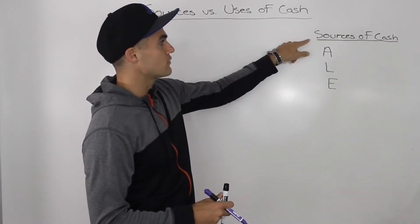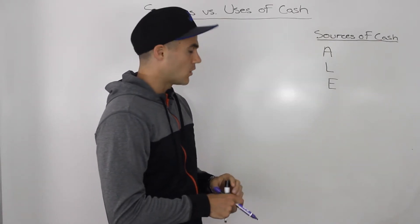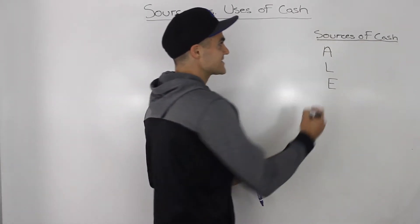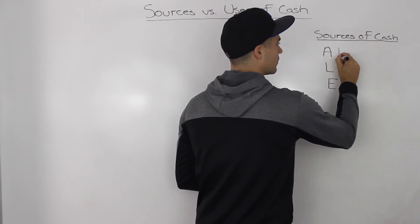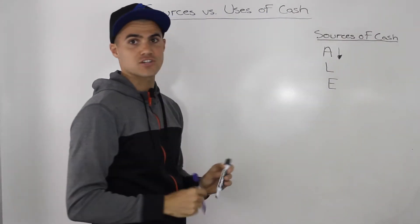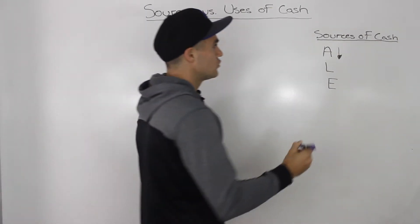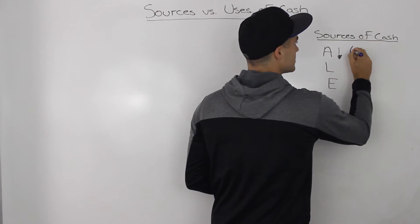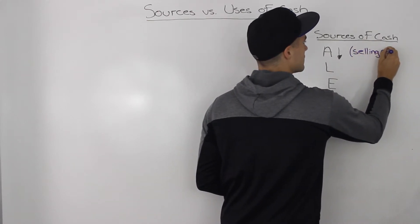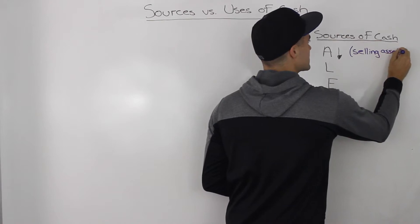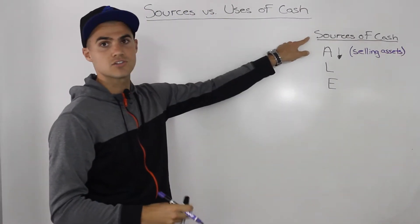Let's start off with sources of cash, beginning with the asset accounts. When assets go down, that is a source of cash for a company. The reason why is when assets go down, usually what's happening is you are selling assets, and when you sell assets, you are receiving cash. Hence, it is a source of cash.